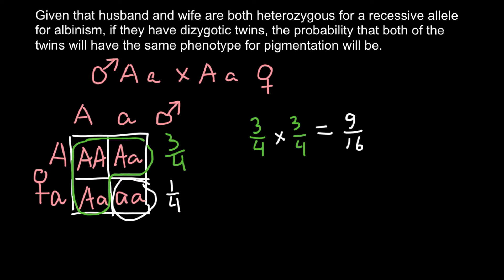The other variant is also possible — that both children would be albino, so they would also share the same phenotype, but this time albino. The probability that the first child would be albino is one quarter, and one quarter that the second child would also be albino, giving a probability of one out of sixteen.